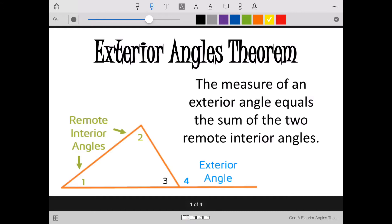So the exterior angles theorem, what it says is that the measure of an exterior angle equals the sum of the two remote interior angles. So take a look at the picture. We have this exterior angle here, and we have two remote interior angles. Remote just means away from.